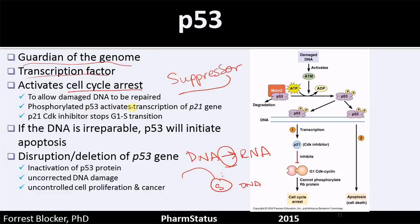Phosphorylated P53 activates the transcription of the P21 gene. Here is P53 sitting on the DNA — it's phosphorylated, see that? It can initiate transcription to make this CDK inhibitor, P21. P21 is a CDK inhibitor that stops the G1 to S transition, so it stops the cell from duplicating its DNA.